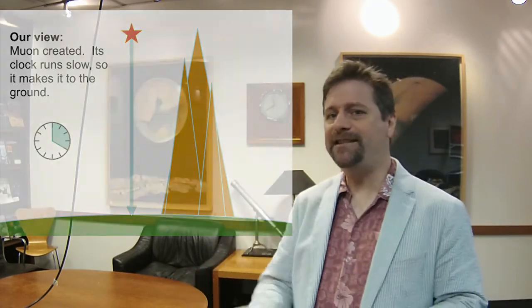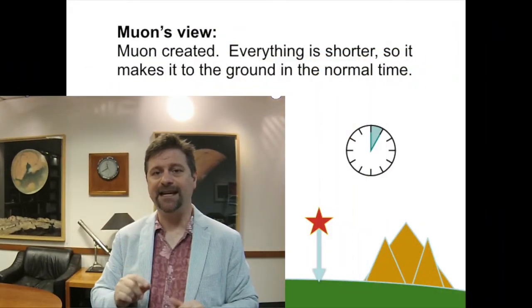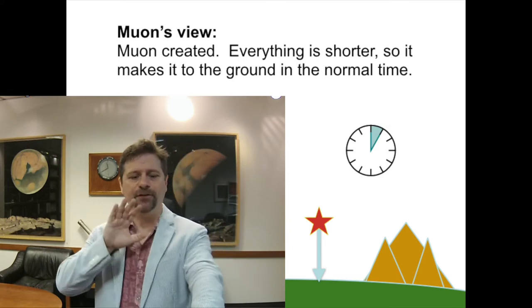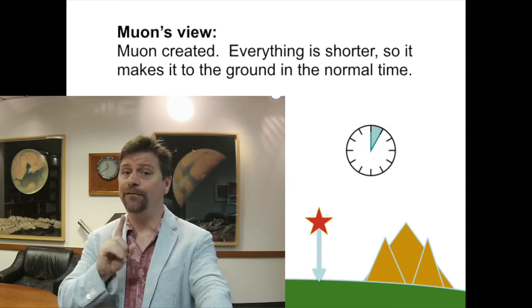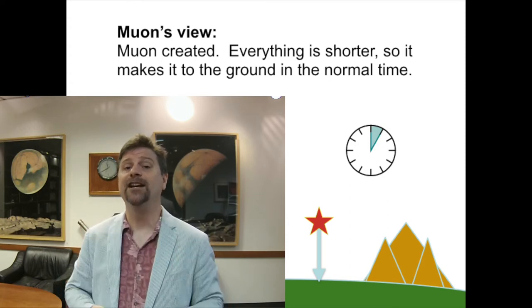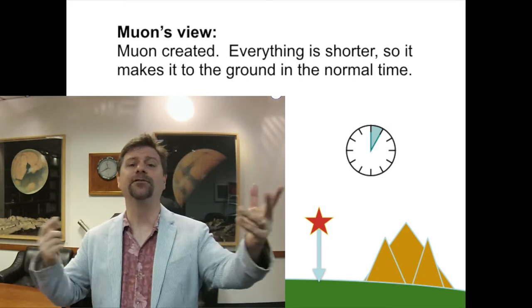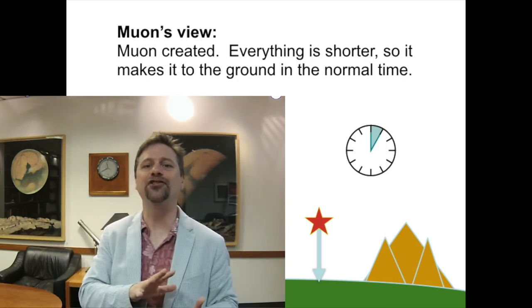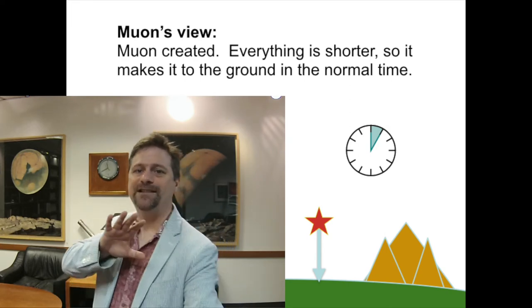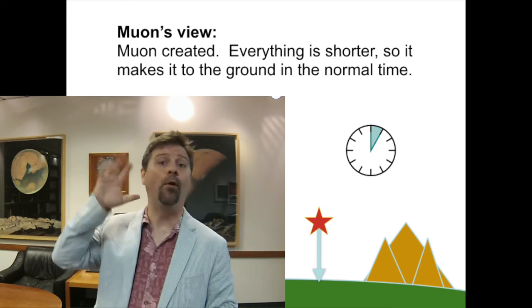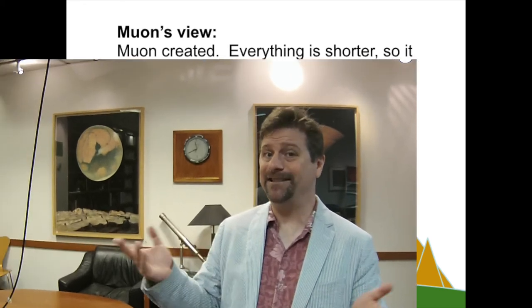Let's apply the special relativistic concept and say we're riding along with the muons — which is what Rossi and Hall actually devised and measured. If you're riding along with a muon, you can see that you arrive at the Earth. In your own clock timeframe you live a microsecond and a half, going only about 500 meters before you fall apart. So therefore, the atmosphere appears compressed in the direction of motion — the Earth appears to rise up at you faster because the distance between where you were born and where you hit the Earth is shorter.